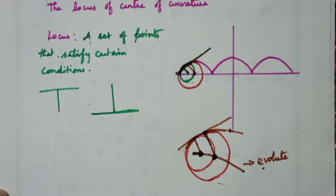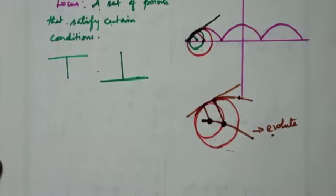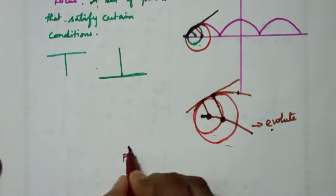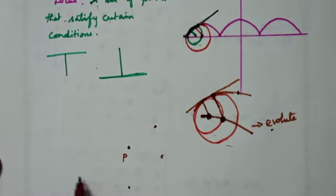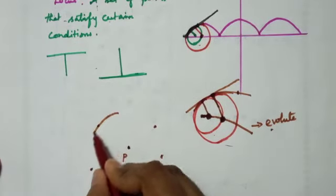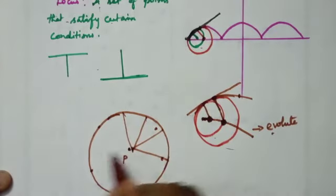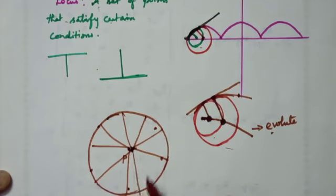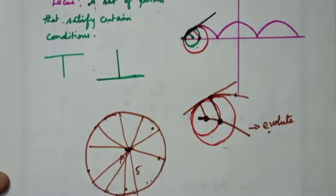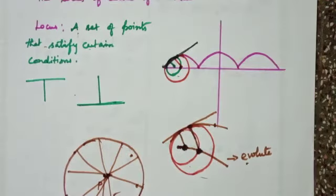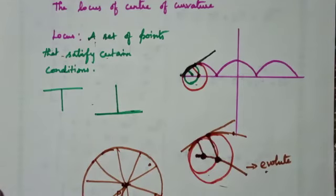The evolute curve is the locus of the center of curvature. That is, the locus is the set of all centers of curvature. Let point P be a point on the curve; the corresponding center of curvature is determined. As P moves along the curve, the set of all such centers of curvature forms the evolute. So, locus of center of curvature is nothing but the evolute.